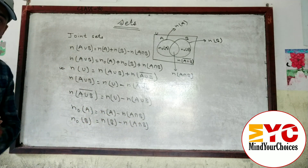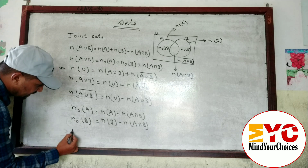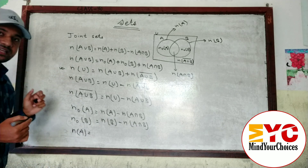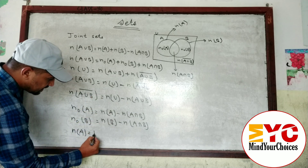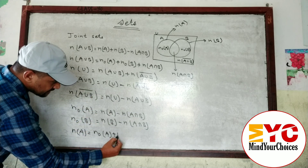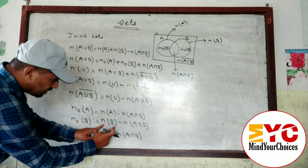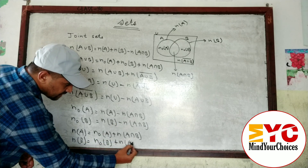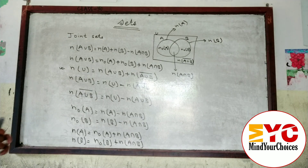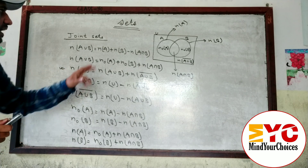I got comments asking how to find n(A) and n(B). To find n(A), take n(A∩B) to the left side in the n(only A) formula, so n(A) equals n(only A) plus n(A∩B). Similarly, to find n(B), take the intersection to the left side: n(B) equals n(only B) plus n(A∩B).